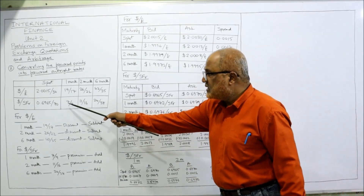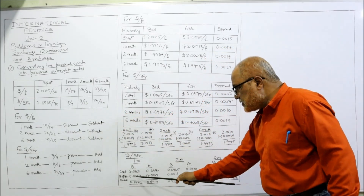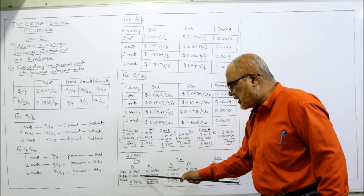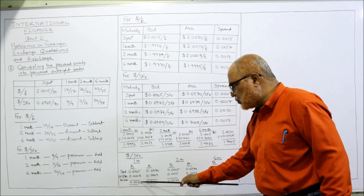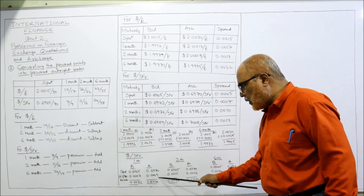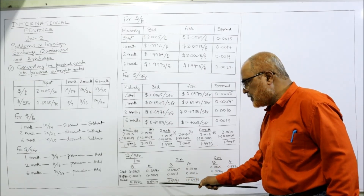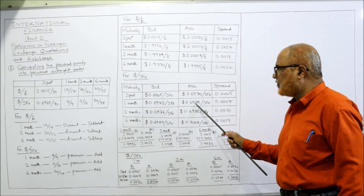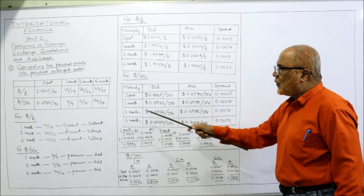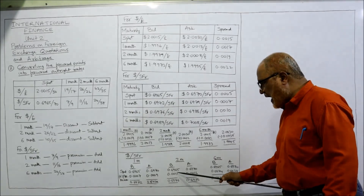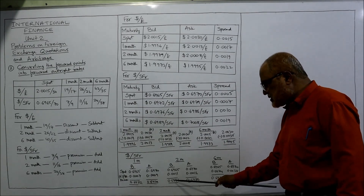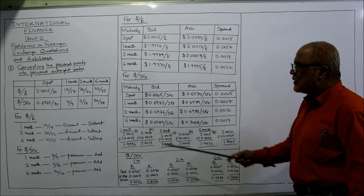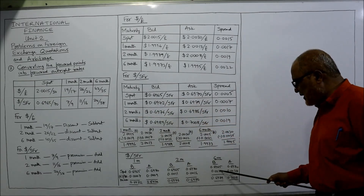For one month: points are 7 and 9. Adding 0.0007 gives 0.6972 and adding 0.0009 gives 0.6979. So the one-month bid is 0.6972 and ask is 0.6979. For two months: points are 11 and 16, giving bid 0.6976 and ask 0.6986.